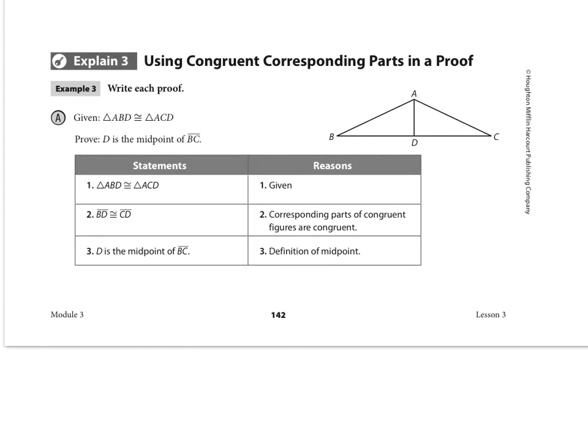So the type of proof that we are going to emphasize in this class is called a two-column proof, and you can clearly see the two columns here. The left-hand column is statements, the right-hand column is reasons.